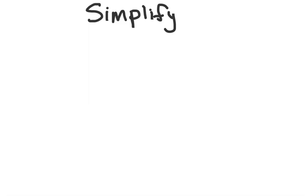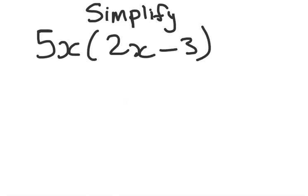The examples we're going to do now are about simplification. To simplify, I'm going to start with 5x multiplied by 2x minus 3. In a situation like this, we must first determine inside the bracket how many terms we are talking about.